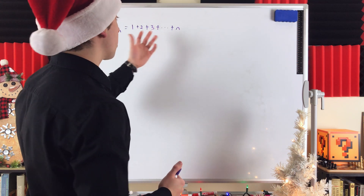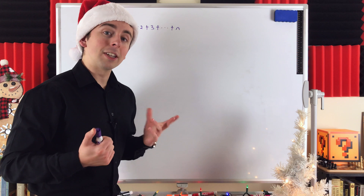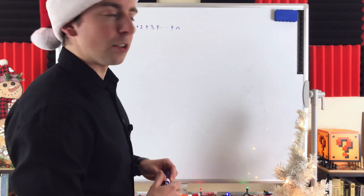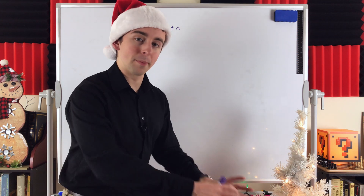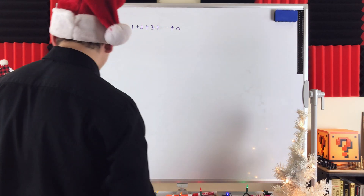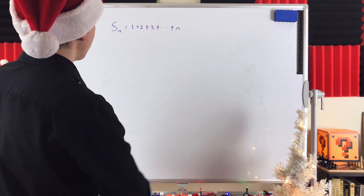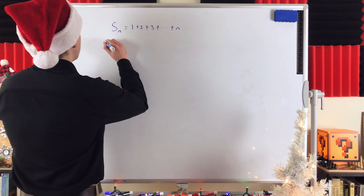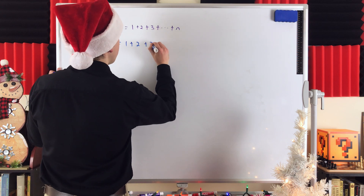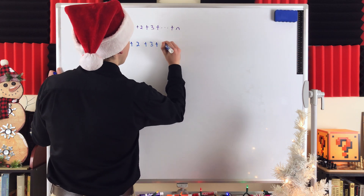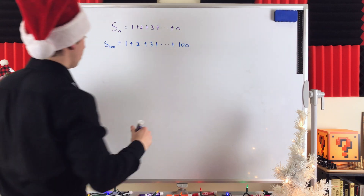A good place to start when trying to solve a general problem like this is to look at a specific example, see a pattern, find a way to solve the problem, and then generalize it. So let's look at S100 — the sum of the first 100 counting numbers: 1 plus 2 plus 3 and so on all the way up to that last plus 100.